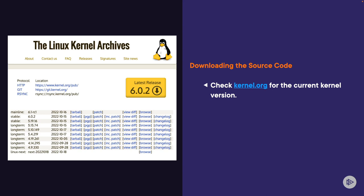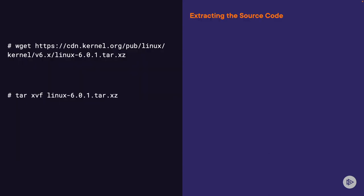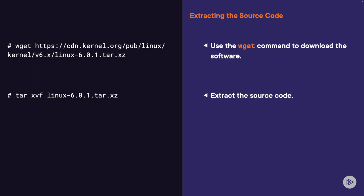We'll check for the current kernel version. The latest release is 6.0.2, but best practice is to download one release before the latest for stability and bug fixes. So we'll be working with kernel version 6.0.1. First, we'll use the wget command to download the software, and then use the tar command to extract the source code.